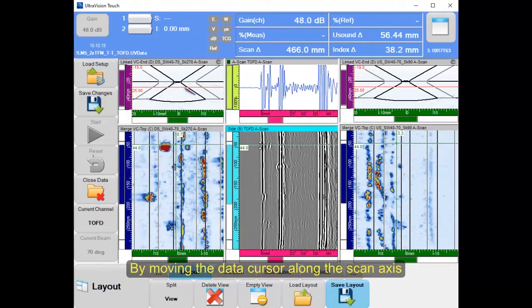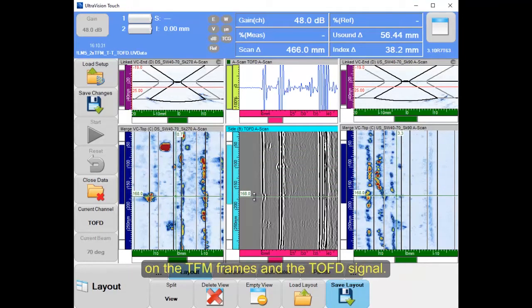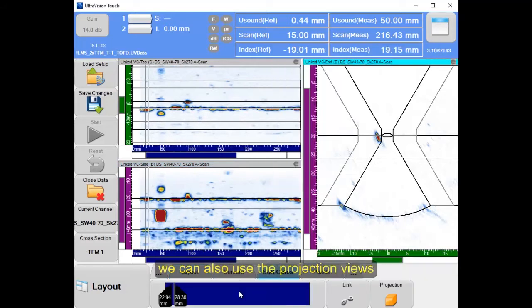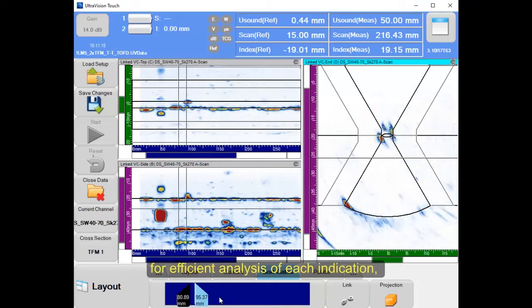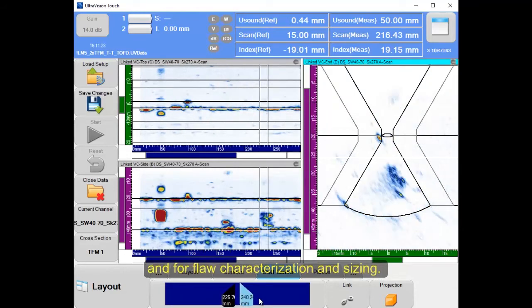By moving the data cursor along the scan axis, the four manufacturing flaws are clearly detected on the TFM frames and the TOFD signal. Since each of the groups includes full volumetric data, we can also use the projection views for efficient analysis of each indication, and for flaw characterization and sizing.